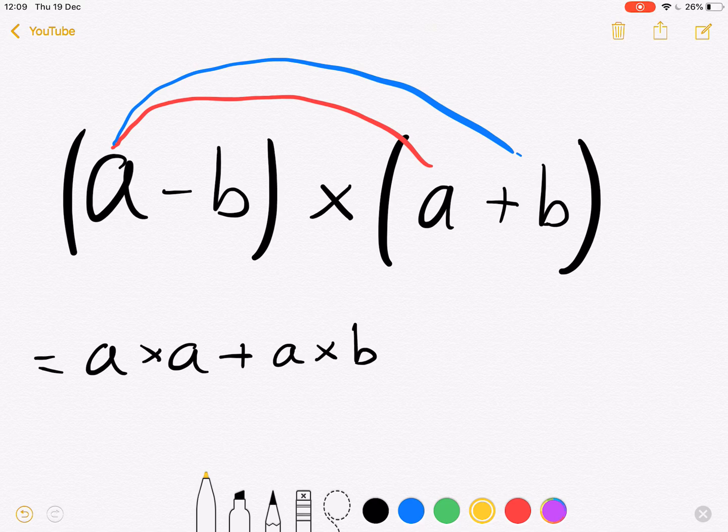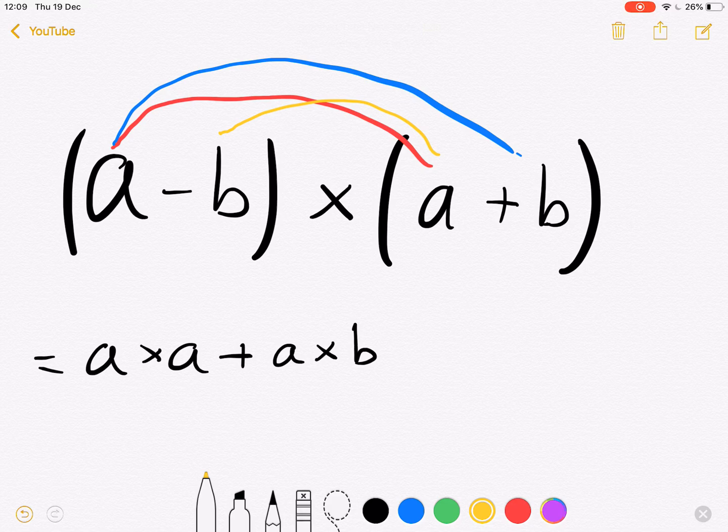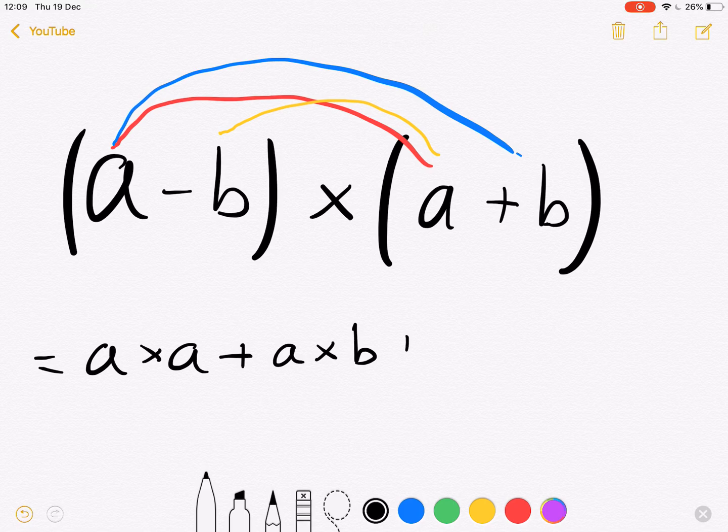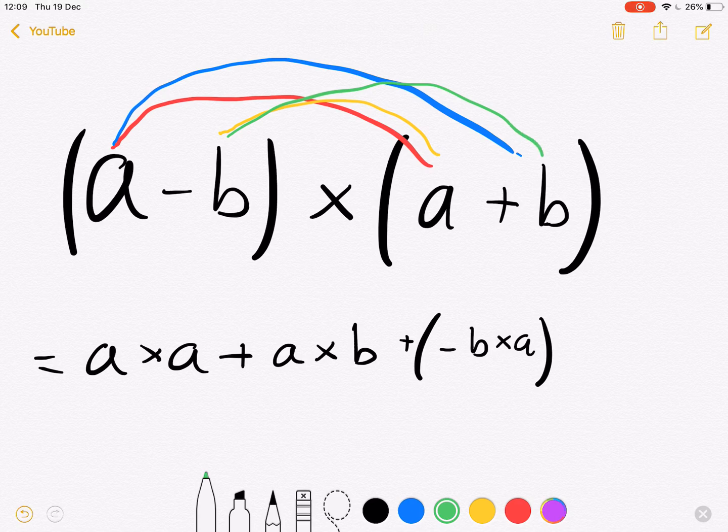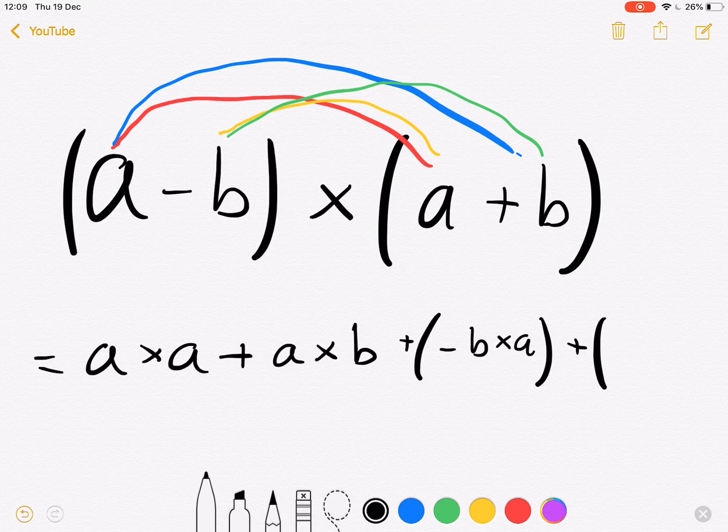Then we have -b × a, so I'll do this -b × a. And then we have -b × b, so I'll put it again in brackets, -b × b.